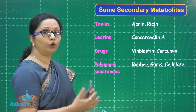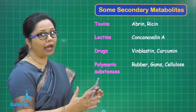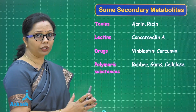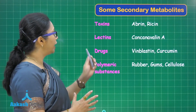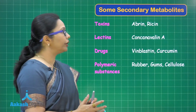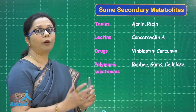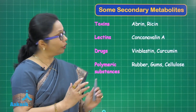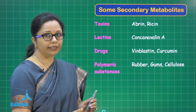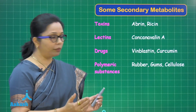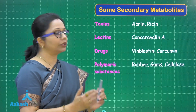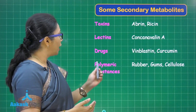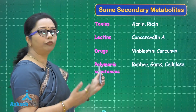Toxins include ebrin and ricin — both are chemically proteins. Ebrin comes from the plant Ebrus and ricin from Ricinus, which is castor. Ricin is highly toxic — one of the most toxic substances known to humankind. Lectins — an example is concanavalin A, extracted from a bean. Drugs: vinblastine is from Vinca rosea, also renamed Catharanthus roseus, the common plant known as sadabahar, and vinblastine is an anti-cancer drug.